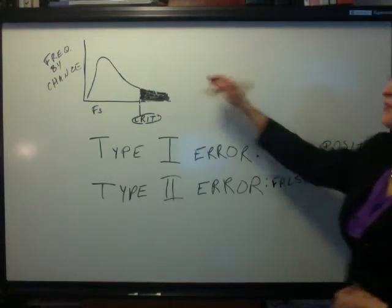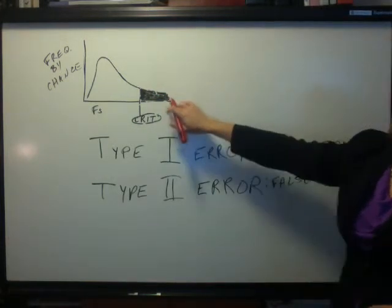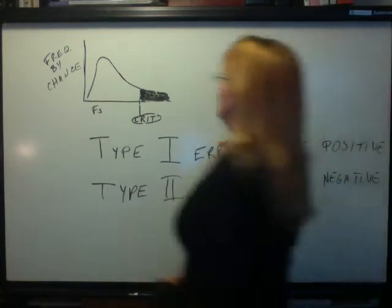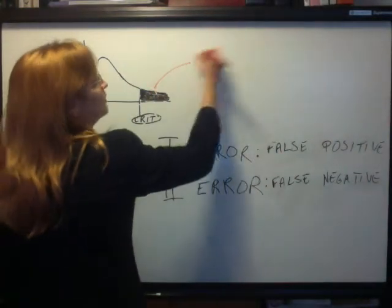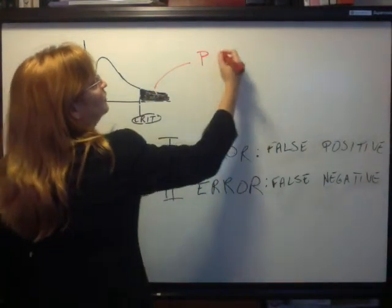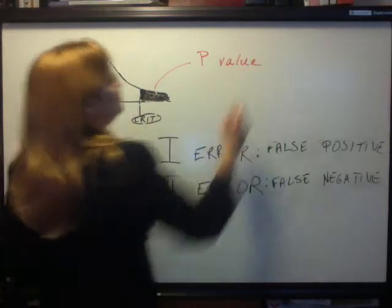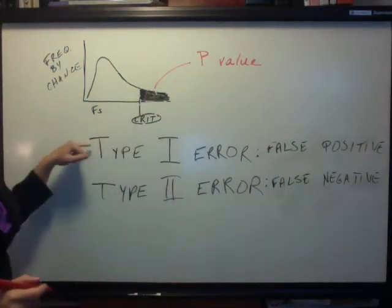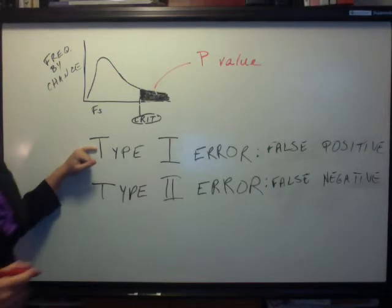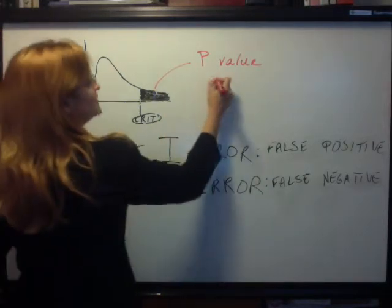The names for this are this percent that we use to figure out our critical F, P value, P because it's the probability of making a Type 1 error. It's also known as alpha.